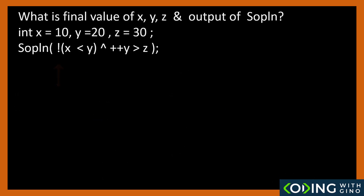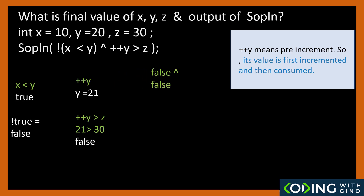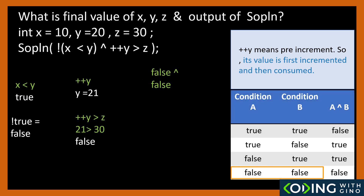Last question uses the NOT operator and XOR operator. First condition: is x less than y? Yes, that gives true. NOT operation is performed on this — NOT simply inverts the value, so NOT of true is false. The first condition is hence false. SOPLN looks like false XOR with something. Next, plus plus y is pre-increment, so y is incremented to 21 first. Is 21 greater than 30? False. SOPLN becomes false XOR with false. From the XOR table, false XOR false gives false. Hence the answer is false, and final values are shown on the screen.